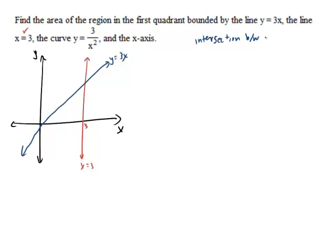So, we find the intersection between y equals 3x and x equals 3. That's the point. Plug in x equals 3, we get y is 9. So it's the point (3, 9). So it's the point (3, 9) is where they intersect. Okay.